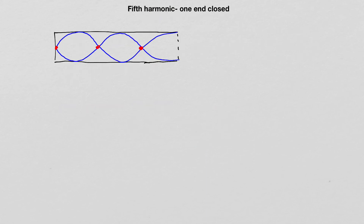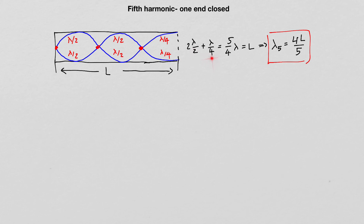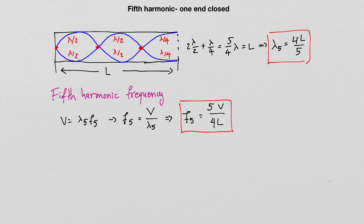Here is the standing wave corresponding to the fifth harmonic in the pipe with one end closed: three nodes and an antinode at the opening. The first branch is λ/2, the second also λ/2, and the last is λ/4. So 2(λ/2) + λ/4 = five fourths λ, equal to the pipe length L. Therefore, λ₅ = 4L/5, and the fifth harmonic frequency f₅ is five times the speed of sound in air divided by four times the length of the pipe.